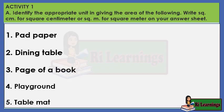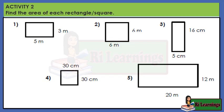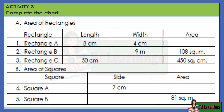Activity 1A: Identify the appropriate unit for giving the area of the following. Write SQ CM for square centimeter or SQ M for square meter on your answer sheet. Activity 1B: Write on your paper the appropriate measure that will complete each sentence. Activity 2: Find the area of each rectangle or square. Activity 3: Complete the chart.